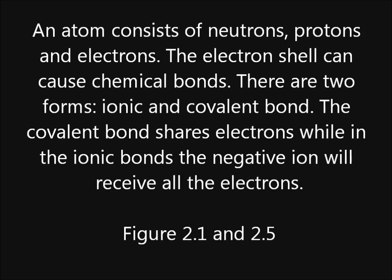An atom consists of neutrons, protons and electrons. The electron shell can cause chemical bonds. There are two forms: ionic and covalent bonds.